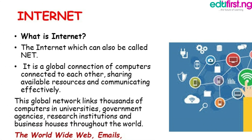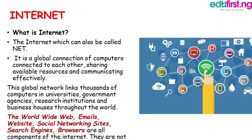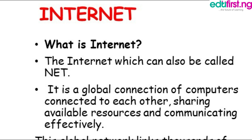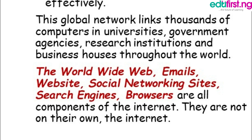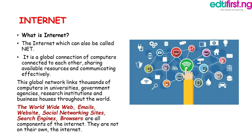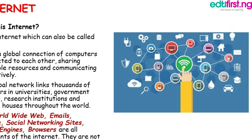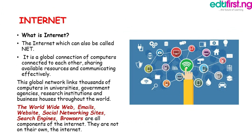What is the internet? The internet can also be called NET — 'I'm browsing the NET.' By definition, it is a global connection of computers connecting to each other, sharing available resources and communicating effectively. This global network links millions of computers in universities, government agencies, research institutions, and business organizations throughout the world. The worldwide web, emails, websites, social networking sites, search engines, and browsers are all components of the internet. They are not on their own the internet. Please take note.